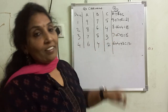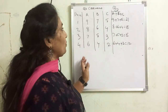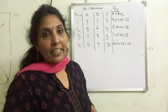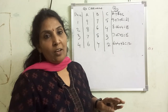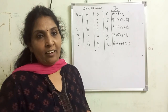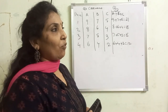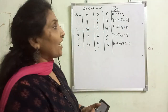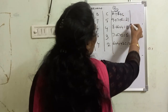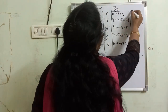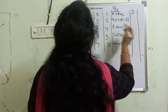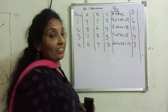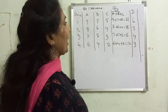Now, if there is influence by one consumer on another, what will happen to market demand? Let me assume that consumer D, who was not interested earlier to buy that product, because of the influence of consumers A, B, or C, also starts entering into the market and starts buying the product. His demand for commodity X is: 6, 5, 4, 3.